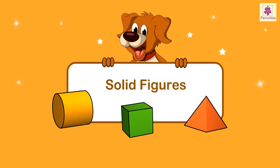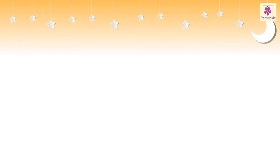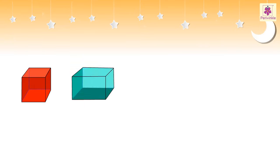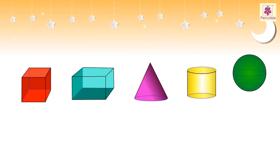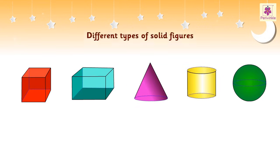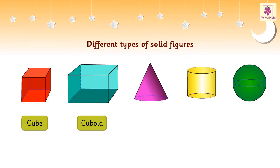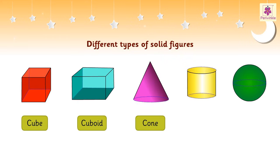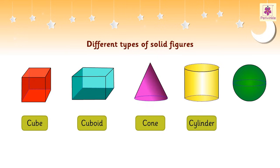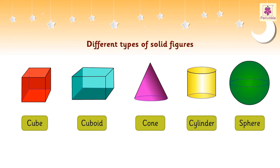Let us explore solid figures. The different types of solid figures are cube, cuboid, cone, cylinder, and sphere.